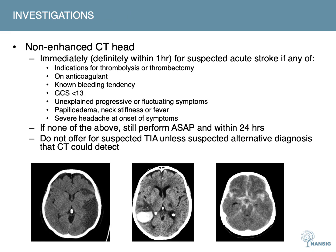Now let's move on to investigations. Stroke is a diagnosis that must be confirmed using imaging, as estimating regions of brain infarction using clinical signs alone is inaccurate. TIA likewise is a diagnosis that can only be confirmed once brain infarction is excluded on imaging. The most important investigation is a non-enhanced CT head, used not only to identify affected brain regions but also to exclude hemorrhage. CT should be performed immediately, and definitely within one hour, for a suspected acute stroke if any of the following apply.